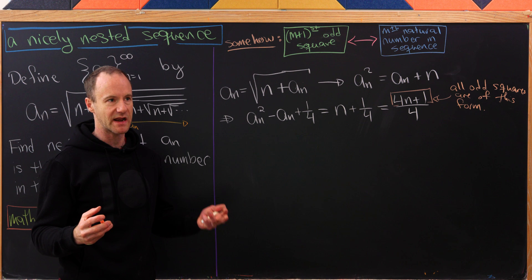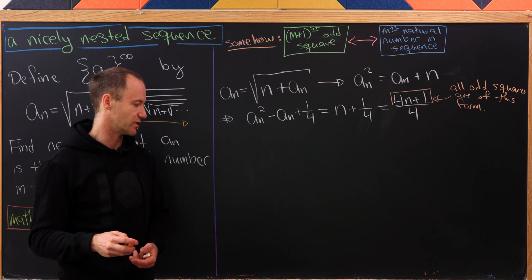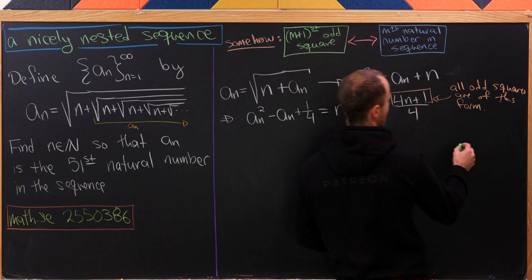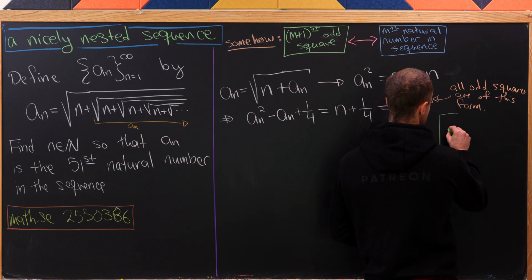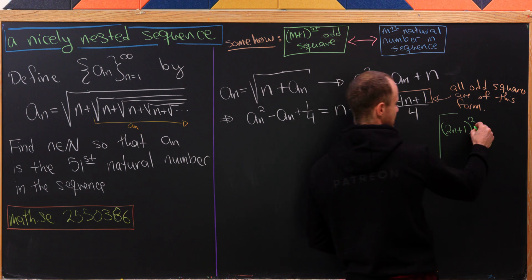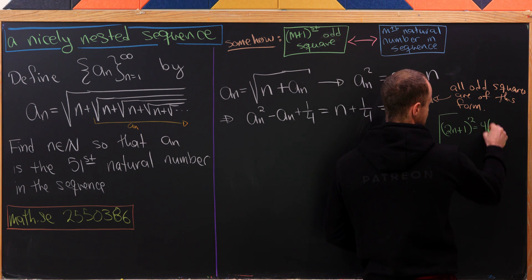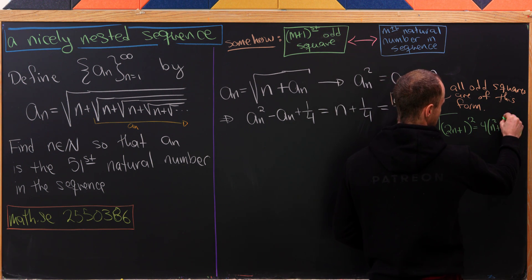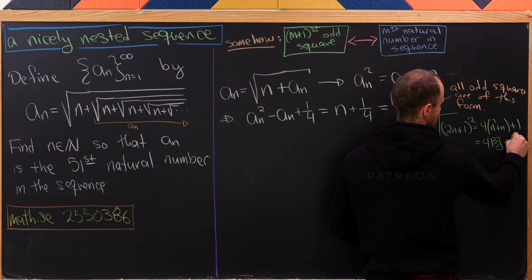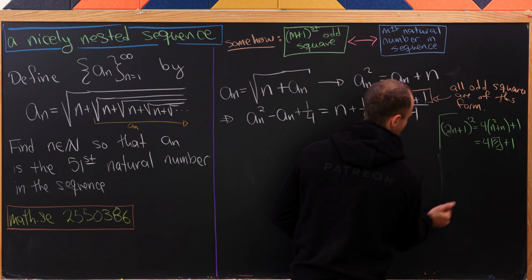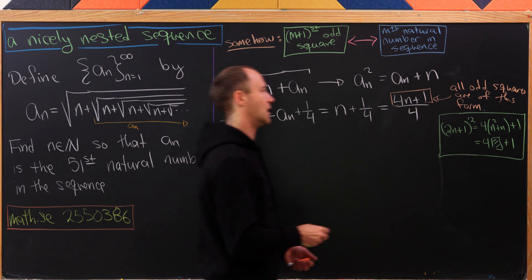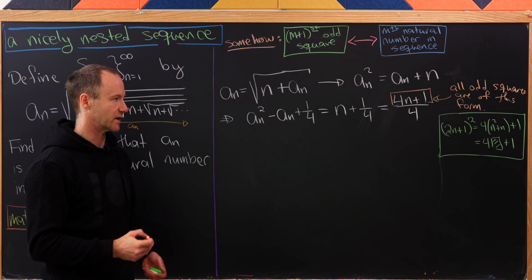A priori, we might have some of the form 4n + 3, but in fact we don't. Let me sketch out a little way to show this. Let's take an arbitrary odd number, that'll be 2n + 1, and we'll square it. That will turn into 4 times the quantity (n² + n) + 1. But that's most definitely of the form 4 times something plus 1. So that's essentially all it takes to show that all odd squares are of the form 4n + 1.